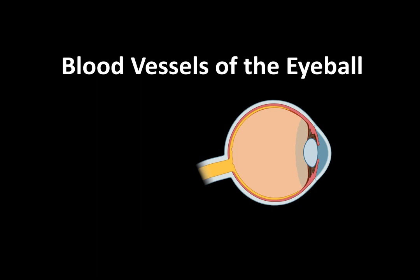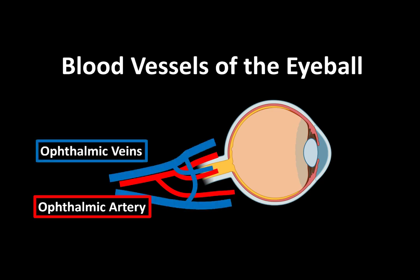What's up, Meridae here, and in this video we're going to talk in detail about the vascular supply of the eyeball. We'll start with the ophthalmic artery and then quickly run through the veins.